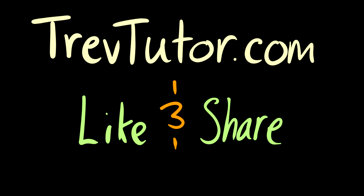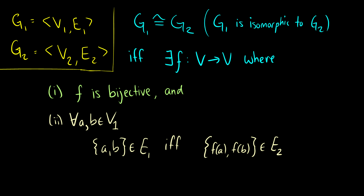Welcome back to Discrete Mathematics. Today we're going to take a look at isomorphisms and bipartite graphs. Here is a definition of isomorphisms. We say g1 equals (V1, E1), g2 equals (V2, E2), and g1 is isomorphic to g2 if there exists a function f from V1 to V2 where f is a bijection, and for all edges (a,b) in E1, the edge (f(a), f(b)) is in E2. Know the definition, but come back to it after I show you an example.